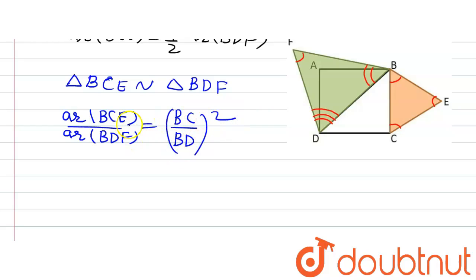Because we know that when two triangles are similar, then the ratio of their area is equal to the ratio of square of their corresponding sides. So we will have BC divided by BD whole square.